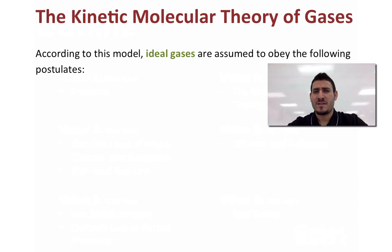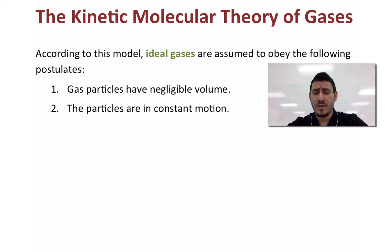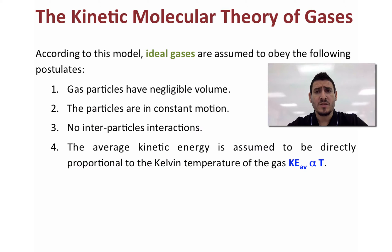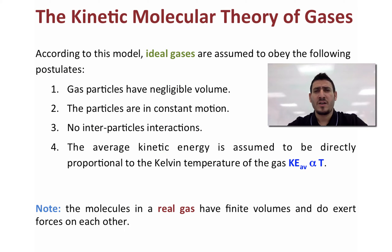Now the kinetic molecular theory of gases says that ideal gases are assumed to obey the following postulates. Number one, gas particles have negligible volume. Number two, the particles are in constant motion. Number three, no interparticle interactions. And number four, the average kinetic energy is assumed to be directly proportional to the Kelvin temperature of the gas. Note that these postulates are not exactly true because in real gas, molecules have finite volume and they do exert forces on each other.